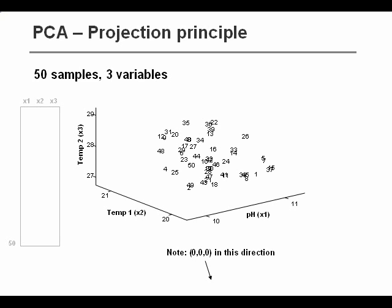Here's an example of a three variable data set. So X has three columns, and in this case it has 50 observations, 50 samples. So because there are only three variables, we can plot them in a coordinate system, and we see that there's some structure in the data.